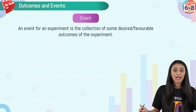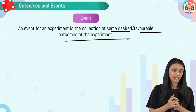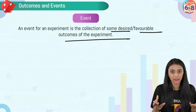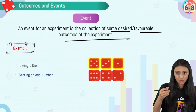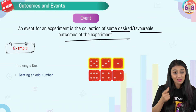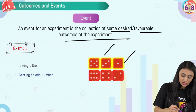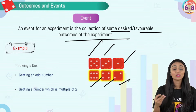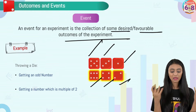An event is a collection of some desired or favorable outcomes from the experiment. For example, when throwing a die, getting an odd number means the event is {1, 3, 5}. Getting a multiple of two means the event is {2, 4, 6}. Events are the favorable, desirable outcomes from all possible outcomes.